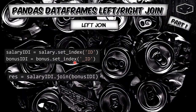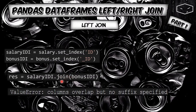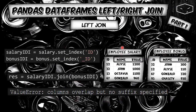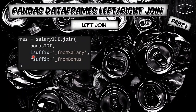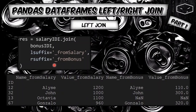To review: first we needed to set the id in both data frames as the index, then we used the join method. We don't need to provide the 'how' parameter because the default for join is left join. We got a columns overlap error because both data frames had columns with the same name. To solve this, we provided lsuffix and rsuffix parameters to distinguish which columns came from salary and which from bonus.